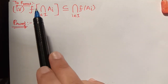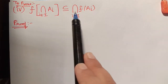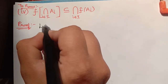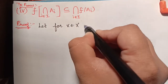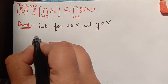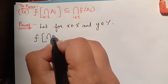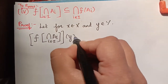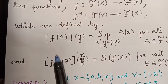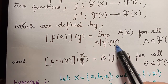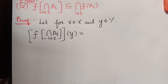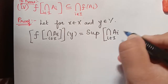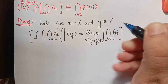Property 4 states that f of intersection of Ai for i an element of capital I is a subset of intersection of f of Ai for i an element of capital I. Let us prove this for a particular value of x and y. Let x be an element of capital X and y an element of capital Y. We consider the left-hand side: f of intersection of Ai for i an element of capital I of y. By the definition of the extension principle, this equals supremum of intersection Ai for i an element of capital I of x, over x such that y equals f of x.